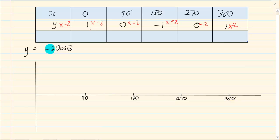So we have 1 times minus 2 is minus 2, 0 times minus 2 is 0, minus 1 times minus 2 is positive 2. Then we have 0 times minus 2 is 0 and 1 times minus 2 is minus 2.